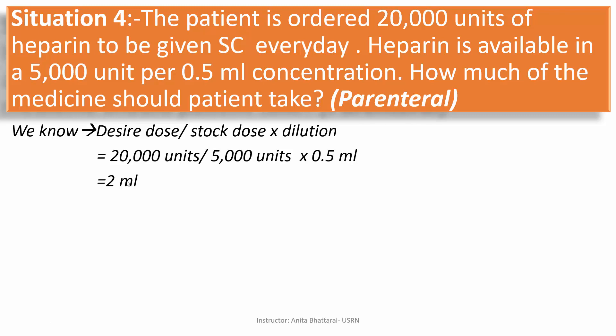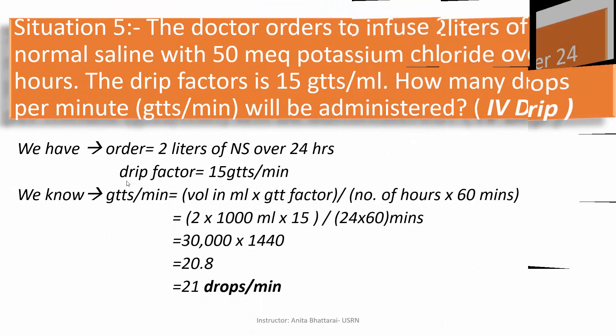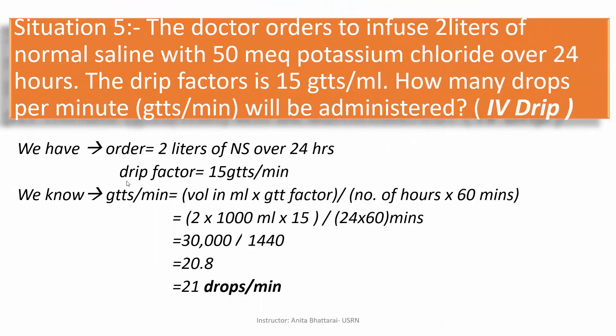Let's see the next situation — situation 5. The doctor orders to infuse 2 liters of normal saline with 50 mEq potassium chloride over 24 hours. The drip factor is 15 gtt per ml. How many drops per minute will be administered? The ordered dose is 2 liters of NS over 24 hours, and the drip factor is 15 gtt per ml.